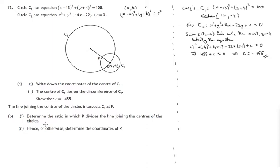Here's part B. The line joining the centers of the circles intersect at P. So this is the center of circle C2. This is the center of circle C1. And they intersect at P. And we have to determine the ratio in which P divides the line joining the centers of the circles. So let's call this A and let's call this B. Now suppose A and B are the centers of circles C2 and C1 respectively.